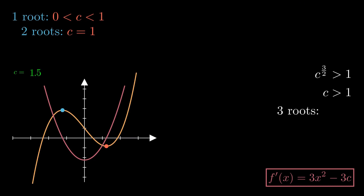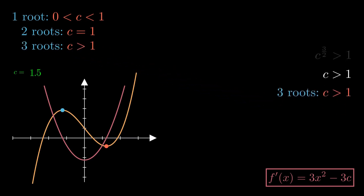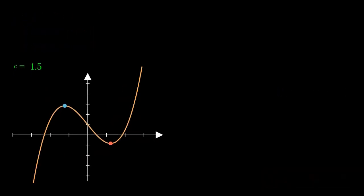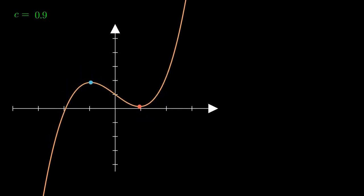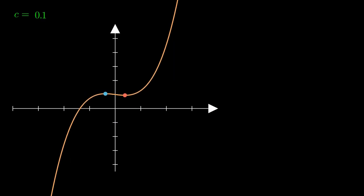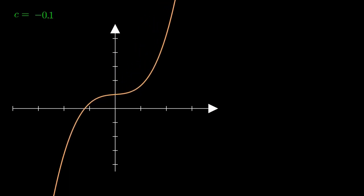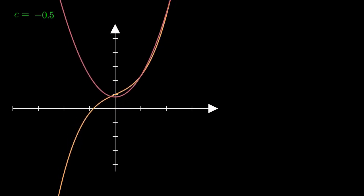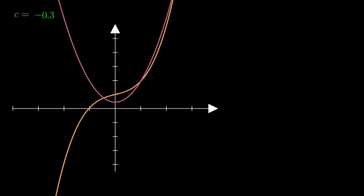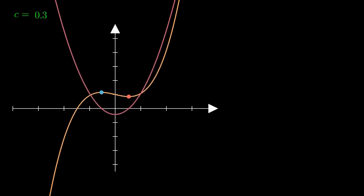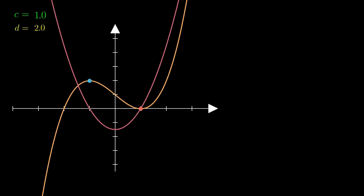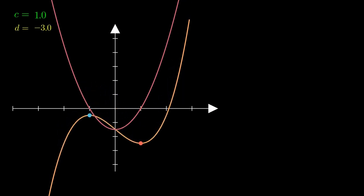Now we look at what happens when d changes. As c changes it determines the shape; d is simply a vertical shift up or down, determining the position. So c determines shape and d determines position. In general, we want to know when the cubic will have only one root — when it crosses the x-axis only once. There are two basic cases to look at separately.